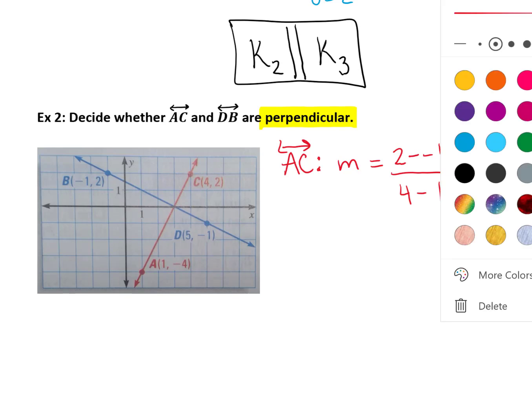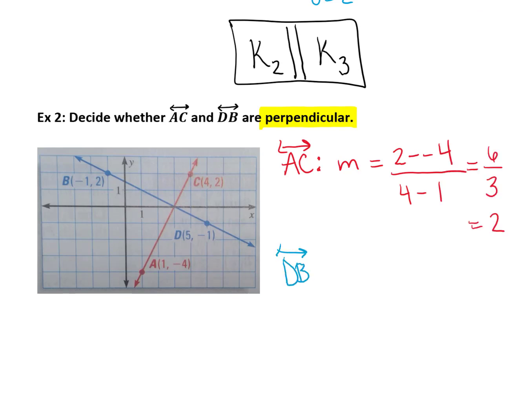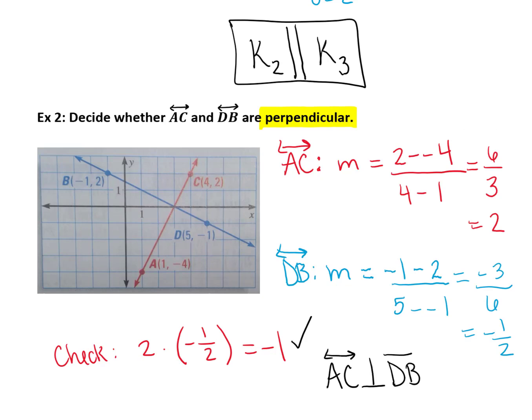And next we want to calculate the slope of the blue line, line db or line bd, and in doing this you end up getting a slope of negative 1 half. So when you compare the relationship of those two slopes, their product equals negative 1. In other words, they are opposite reciprocals of each other. So we can verify that line ac is in fact perpendicular with line db.